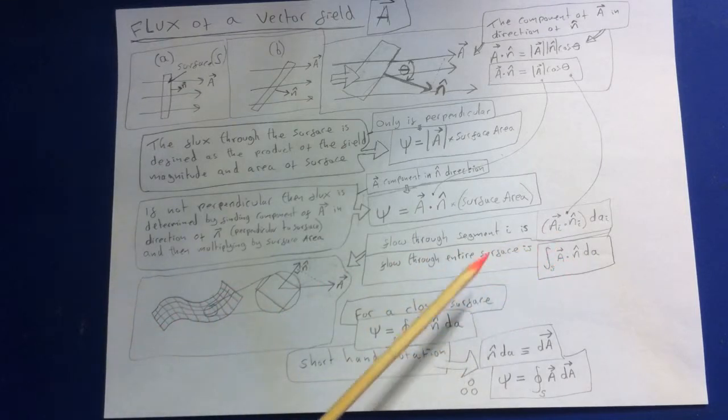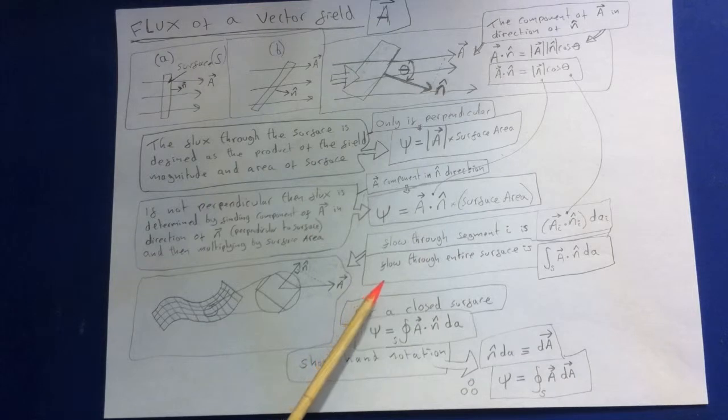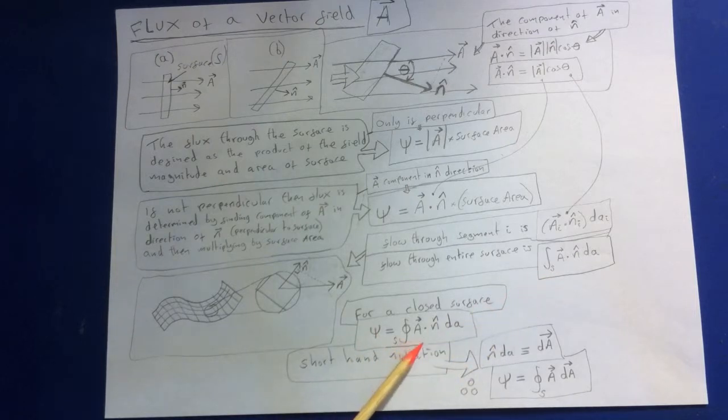Now for a closed surface, in other words, if we've got a surface that completely closed upon itself, for example a sphere, the integral sign includes a circle. So in that case, we will write that as this. So we're going to be using that in Gauss's law later.